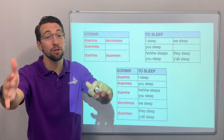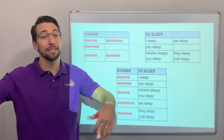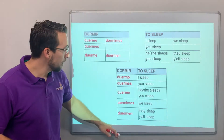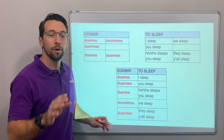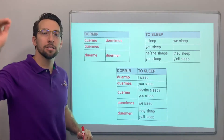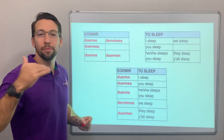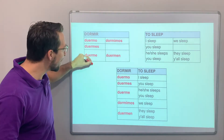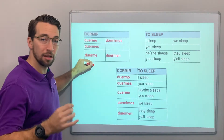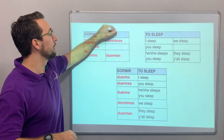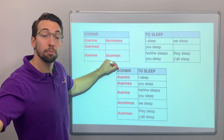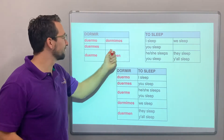So: I sleep, you sleep, he or she sleeps, we sleep. And remember, when you're reading the conjugation chart — the six-box chart — we go down the singular column and down the plural column.